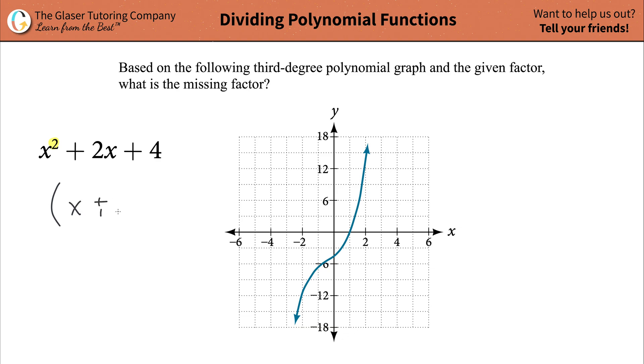And a first degree polynomial has the following form of x plus or minus some value. You probably recognize this as a simple binomial.